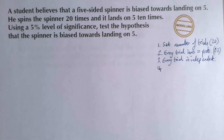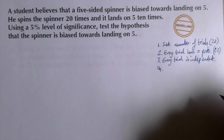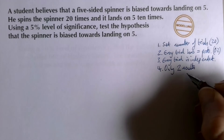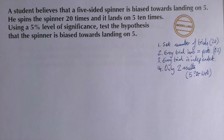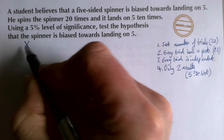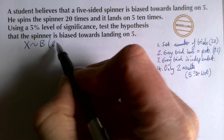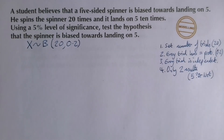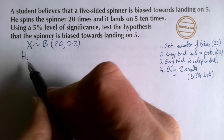The fourth condition is there can only be two results being considered — either a five occurs or it doesn't. So we can set this up as a binomial distribution with 20 trials and probability 0.2. We should always state a null hypothesis, written as H₀: p = 0.2.